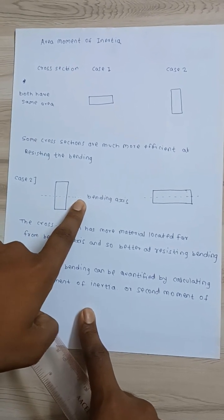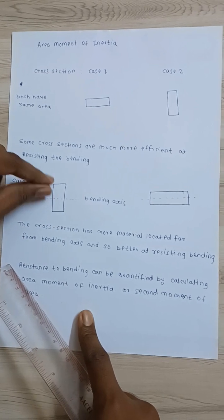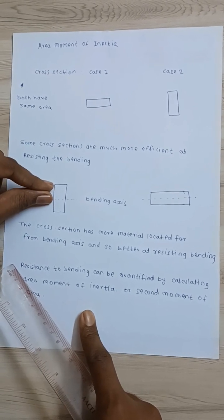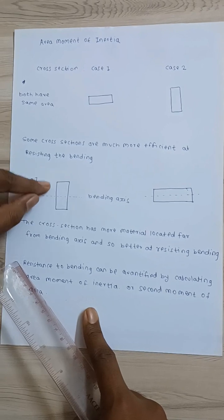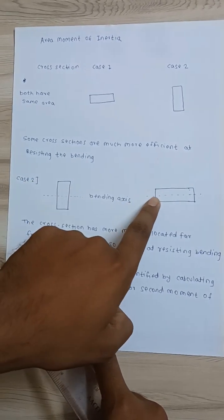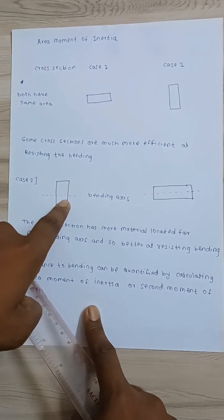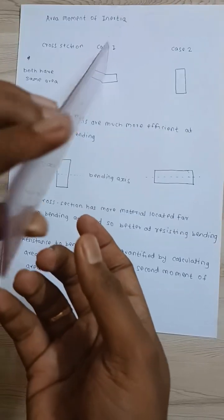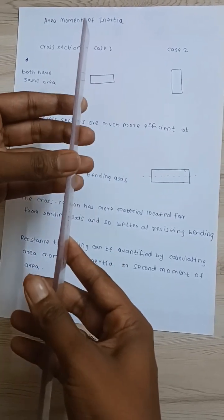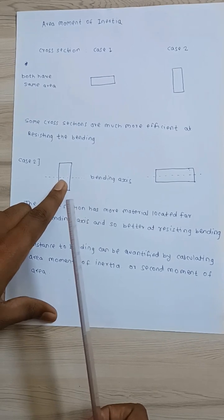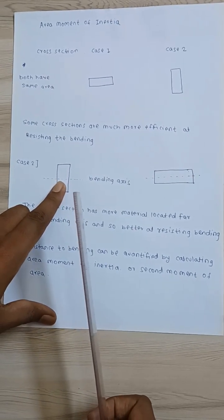...the material in this case spread away from the axis is much more as compared to in this case. That's why this vertical case is providing much more bending resistance, and that is nothing but the moment of inertia.